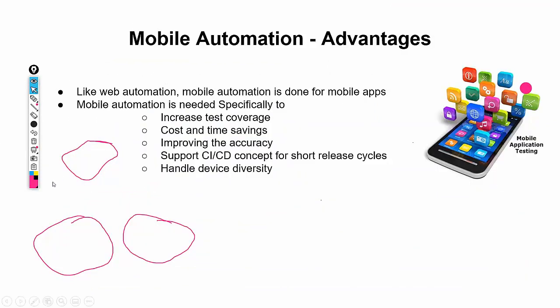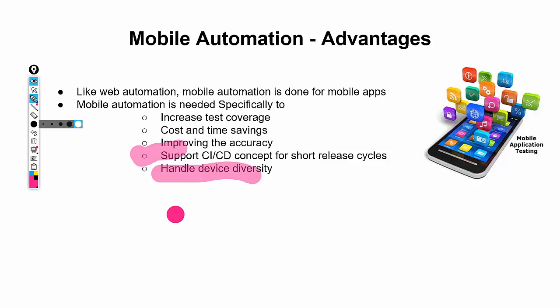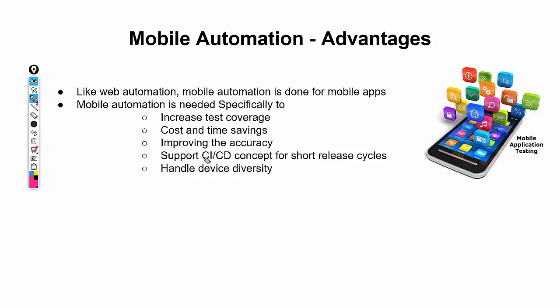Now, what is mobile automation and what are its advantages? With the help of mobile automation we can increase test coverage, reduce cost, save time, improve accuracy, support CI and CD concepts, and handle device diversity. Because of these advantages, mobile automation is very popular right now and a lot of companies — including e-commerce — are emphasizing it.